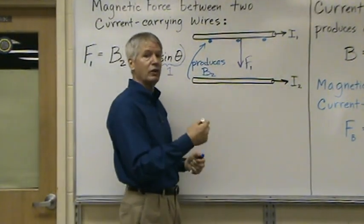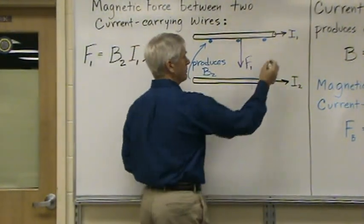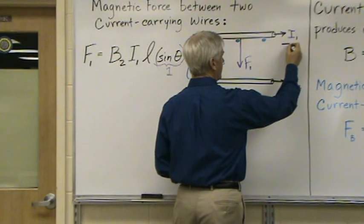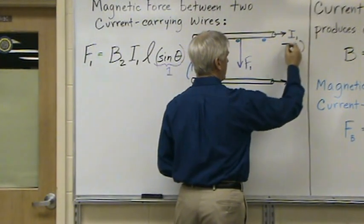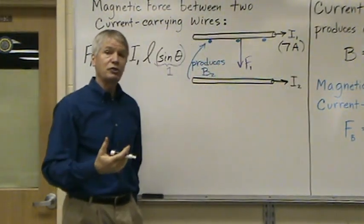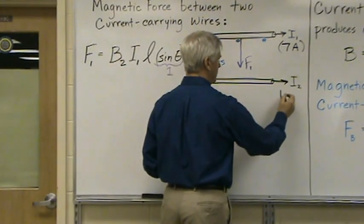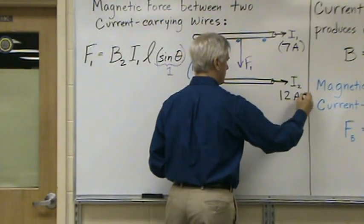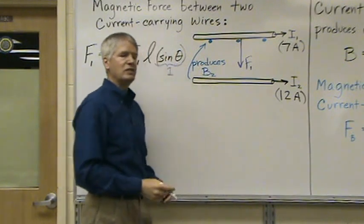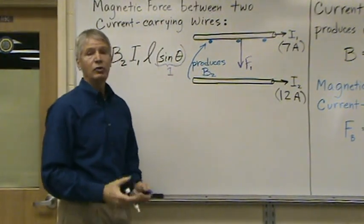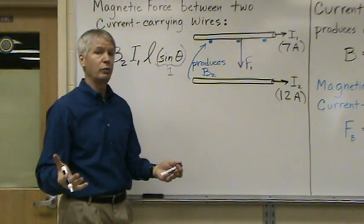So we're going to say that current 1 is 7 amps. We're going to say that current 2 is 12 amps. And the distance between the two is 20 centimeters or 0.2 meters.